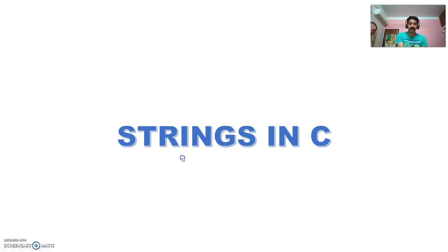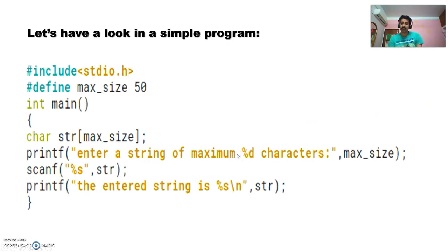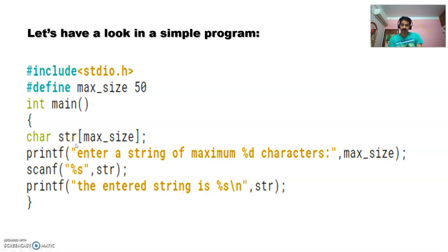Let's start with strings. Let's have a look at a simple program. Have you seen anything new in this program? Yes — firstly, an array is declared with data type character. So a character array is used here, and this is defined as a string. So a new name for a character array is 'string'.